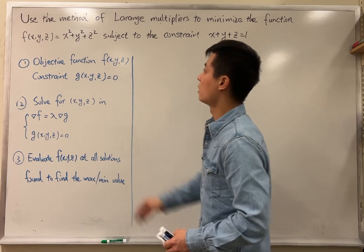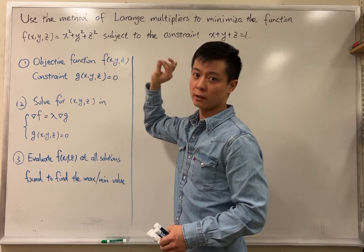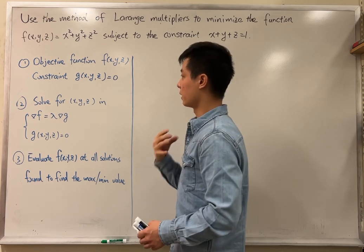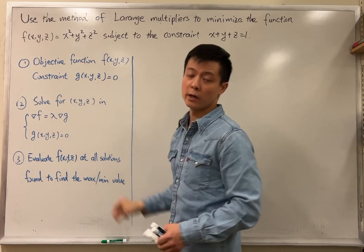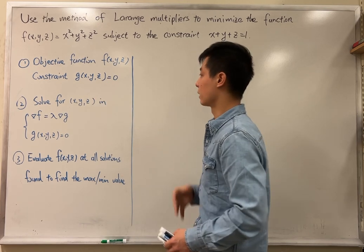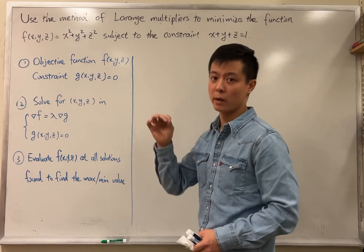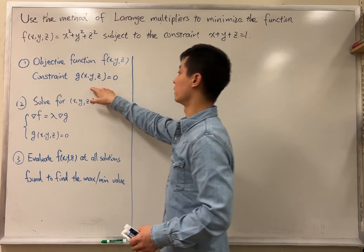We need to first recognize the objective function f(x,y,z) given in the question, as well as another function, g of x,y,z, where the equation g equals 0 describes exactly the constraint given in the question, because it is not always that the constraint is given in this form.